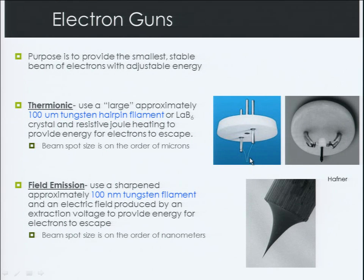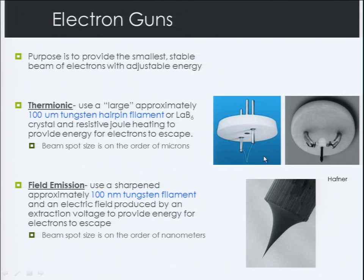The purpose of an electron gun is to provide a small, stable beam of electrons with adjustable energy. There are a few different types. Thermionic guns use a large — around 100 micron — tungsten hairpin filament or lanthanum hexaboride crystal. When we send current through these, they get hot, and through resistive Joule heating they provide energy for the electrons to escape from the tip. The beam size from these types of guns is on the order of microns.